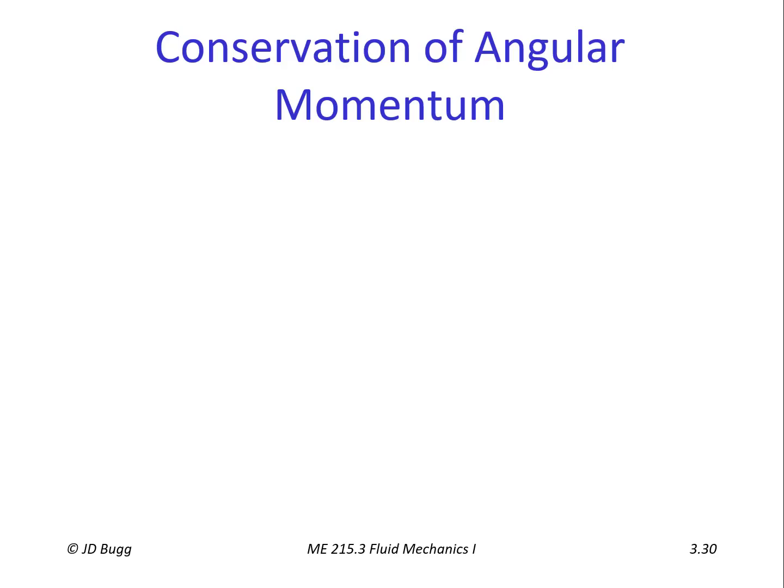In this brief video we're going to develop the equation for conservation of angular momentum. Following the same pattern, we first identify the quantity we're considering, so we let B equal angular momentum. Angular momentum is r cross mv — it's still a vector because the cross product of two vectors is still a vector.